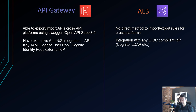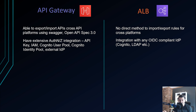API Gateway has extensive authentication and authorization integration out of the box: API keys, IAM, Cognito User Pools, Cognito Identity Pools, and external identity providers. There are five different methods, which can be a bit confusing — a separate video covers this in depth. ALB integrates with any OIDC-compliant identity provider such as Cognito, LDAP, etc., but does not have API key integration since that is an API-specific concept.